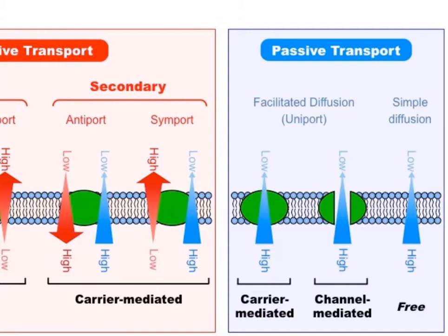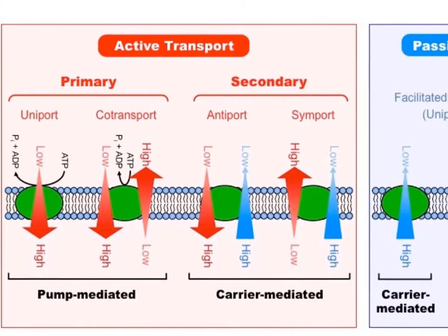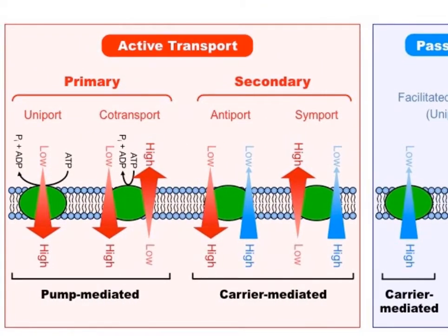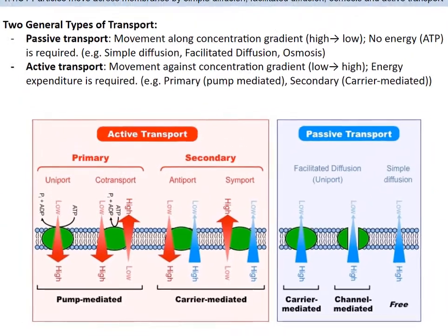The specific types of passive transport we will discuss are simple diffusion, facilitated diffusion, and osmosis. On the other hand, active transport is the movement of molecules against the concentration gradient, meaning they are essentially stuffing molecules into an already stuffed area, from low concentration to high concentration. Because of this, energy in the form of ATP is required. We have two types of active transport: pump-mediated and carrier-mediated.